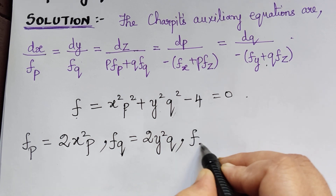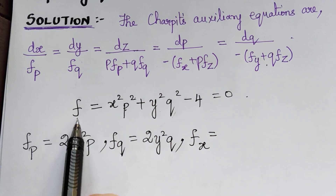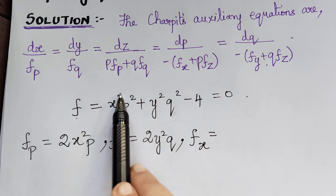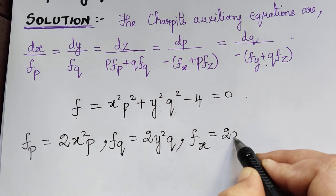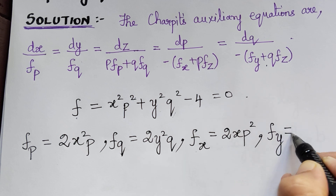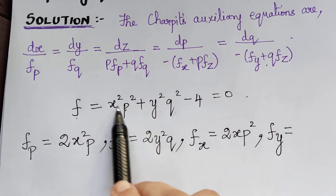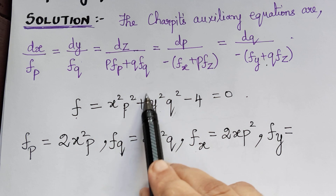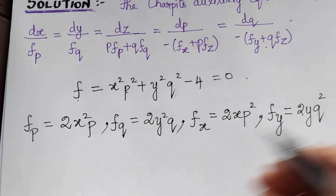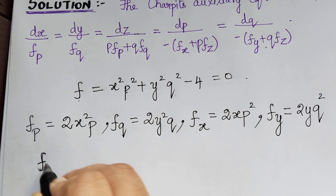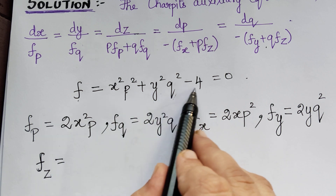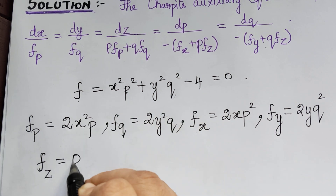Fx is the partial differentiation of F with respect to x. The other terms become 0 and we get Fx = 2xp². Fy, the partial differentiation with respect to y, gives Fy = 2yq². For Fz, since there is no z term in the equation, Fz = 0.